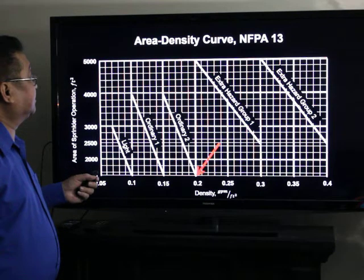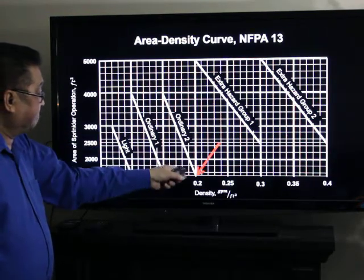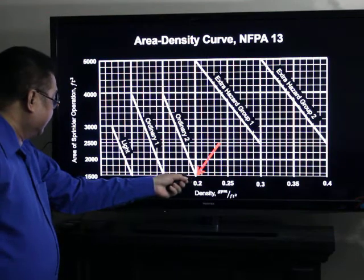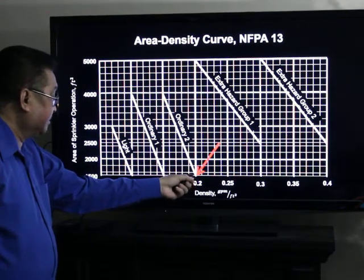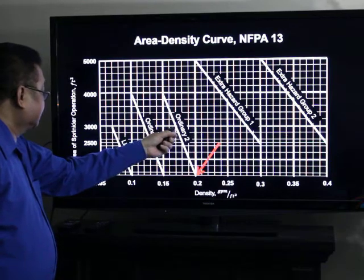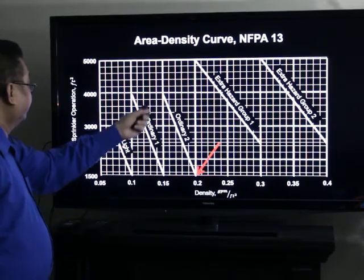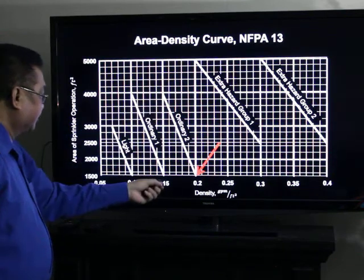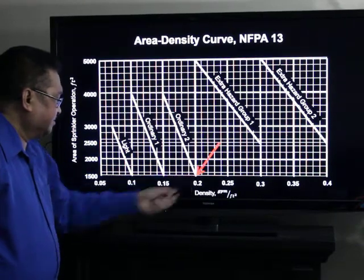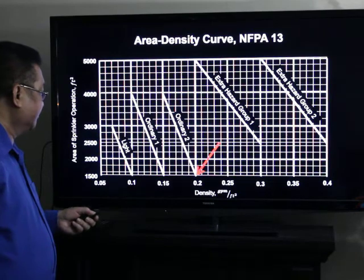From the design area density curve, NFPA 13, we have ordinary hazard group 2. Any point along this line is okay. So you can either choose 1,500 square feet design area at 0.2 gallons per minute per square foot density, or maybe you can use 3,000 square feet at 0.17 gallons per minute per square foot, or you can also use 3,900 square feet at 0.15 gallons per minute per square foot. I prefer to use this 0.2 gpm per square foot at 1,500 square feet of design area.